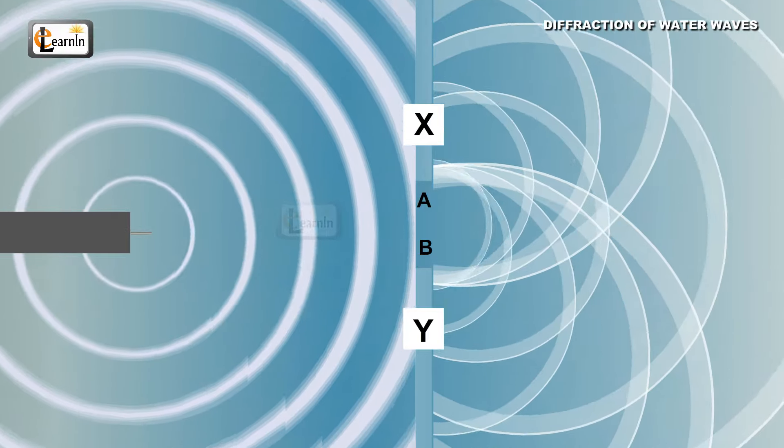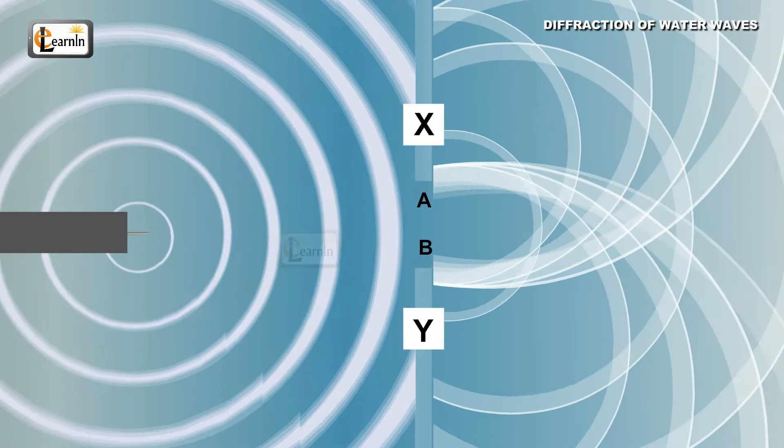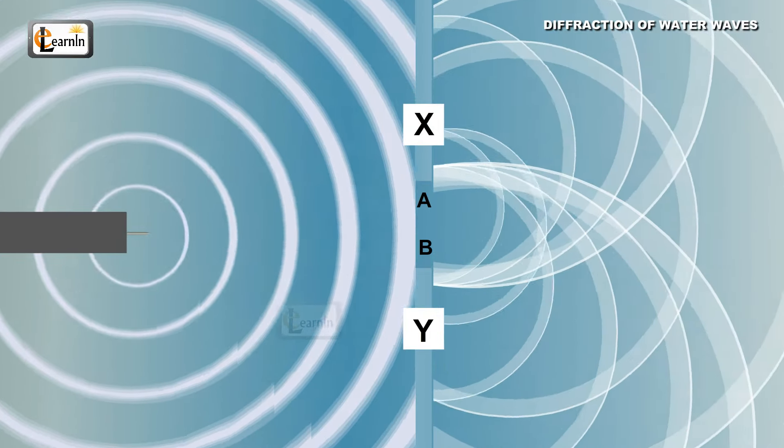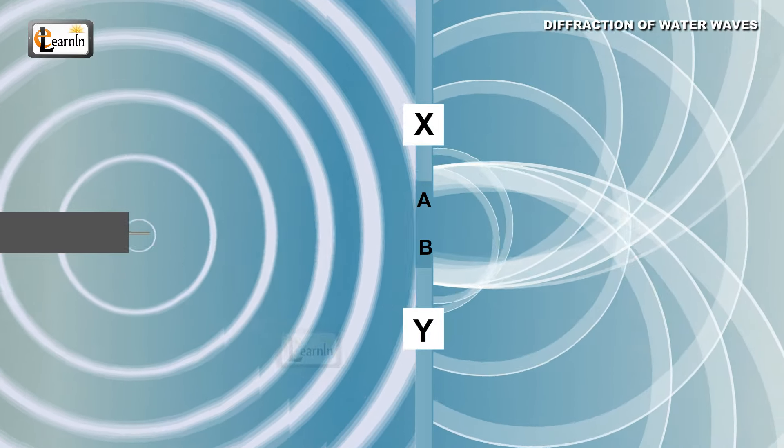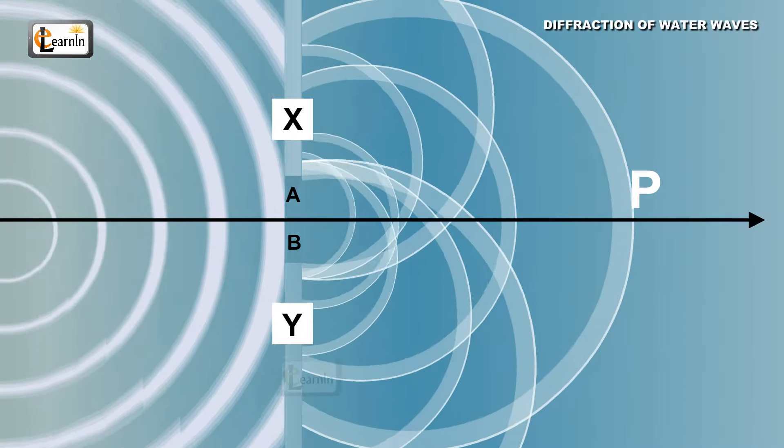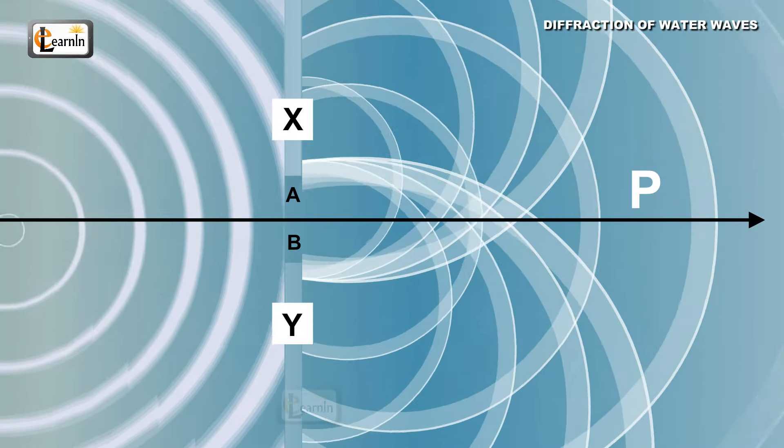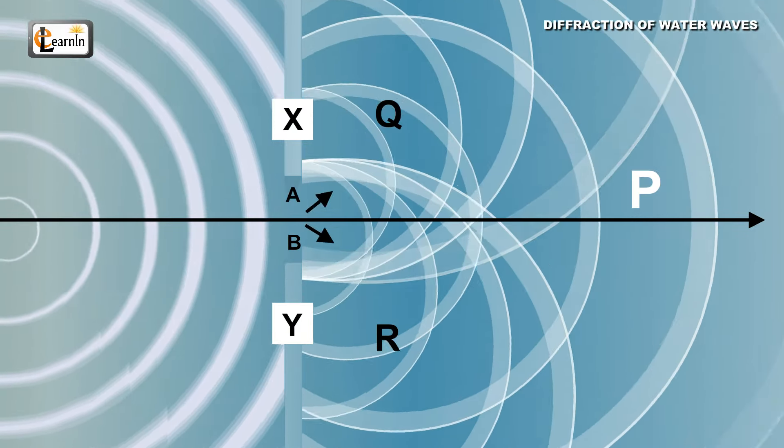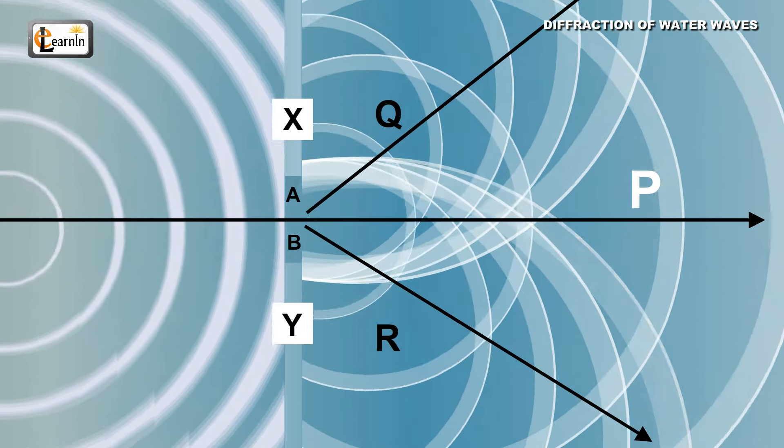The circular wavefront which passes through the AB aperture results in a higher number of wavefronts which are circular in nature and will be spread out in all directions. The waves emerging from the aperture AB would deviate from the original path P and would travel along the directions such as Q and R shown.